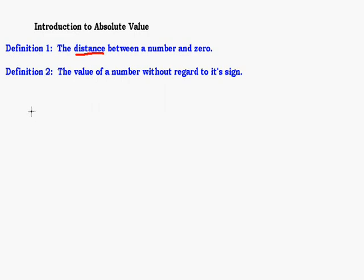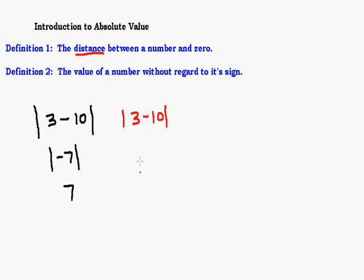One thing I want to show you: if you have more than one number inside your absolute value — say the absolute value of three minus ten — you don't just change things to a positive. You have to do what's inside the absolute value first and get it down to one number before taking the absolute value. Three minus ten is negative seven, and the absolute value of negative seven is seven. Don't do it the wrong way by making everything positive first — that would incorrectly give you the absolute value of thirteen, which is thirteen. That's wrong.